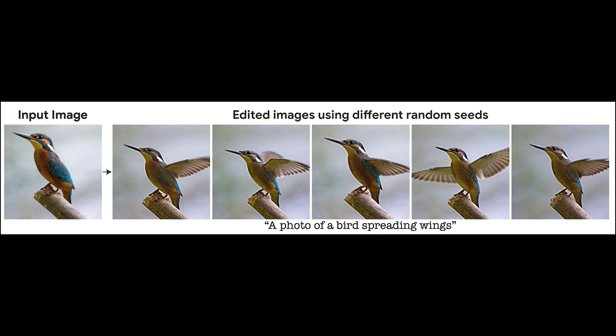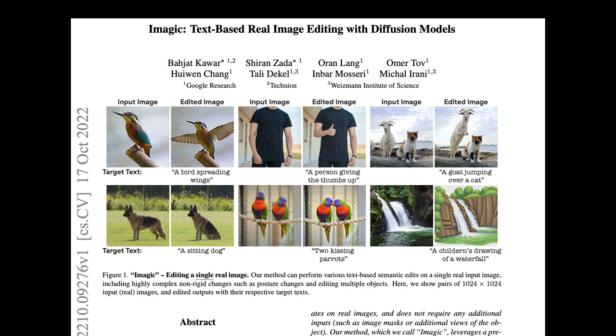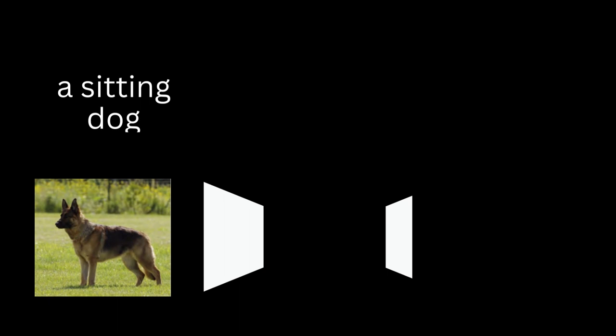So how does Imagic work? As we said, it takes an image and a caption to edit the said image, and you can even generate multiple variations of it. This model, like the vast majority of papers released these days, is based on diffusion models. More specifically, it takes an image generator model that was already trained to generate images from text and adapts it to image editing.